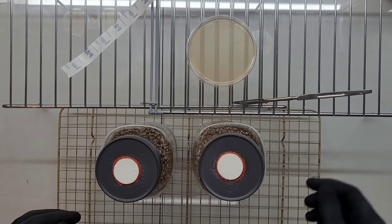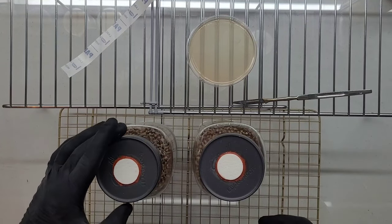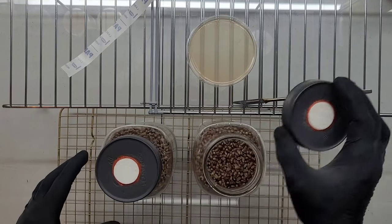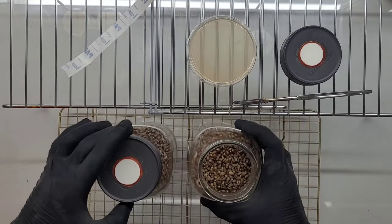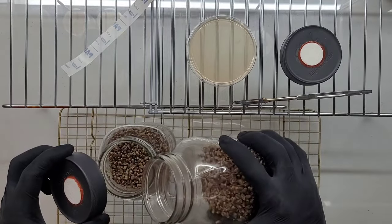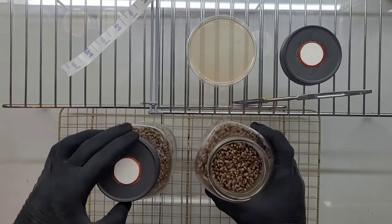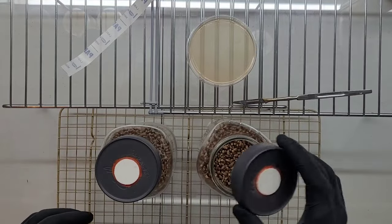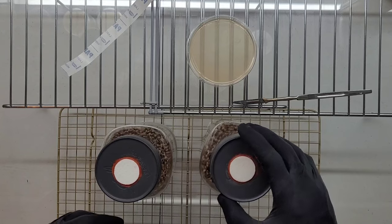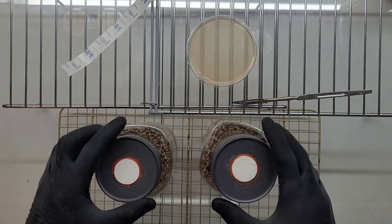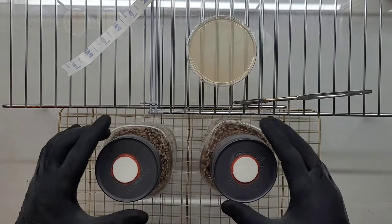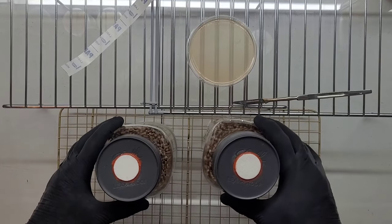Close off your jars by tightening the lids. Give it a good shake and allow time to colonize. Now grain-to-grain can be done inside of the still air box as well. Simply remove the lid, open the lid of the receiving jar, dump in your myceliated grain, close up, close your master jar. If there's anything left over, give it a shake and allow time to colonize at room temperature on your shelf.